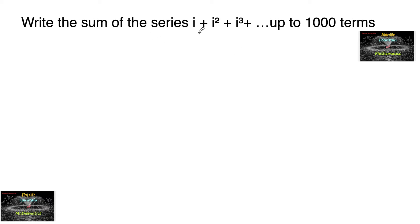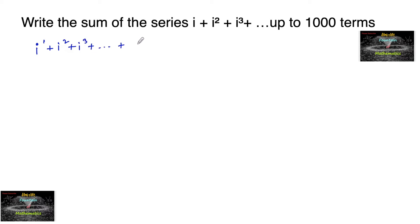Write the sum of the series i plus i squared plus i cubed and so on up to a thousand terms. So the sum required is i to the power of 1 plus i to the power of 2 plus i to the power of 3, and so on up to i to the power of thousand.